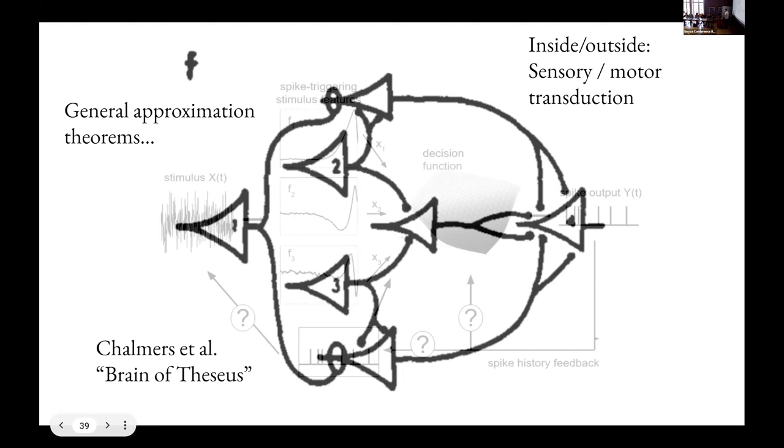This leads to thought experiments like the one that the Chalmers and colleagues have pointed out, like a sort of brain of Theseus. You take a neuron, you take it out, you replace it with a computer that is simulating the same thing. Do you notice a difference? Of course you don't notice a difference. And what about if it's all the neurons? So it's a little weird to think about, but I think it's also hard to argue against that unless you are a spiritualist or something.